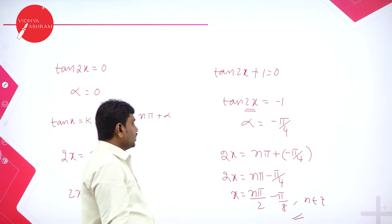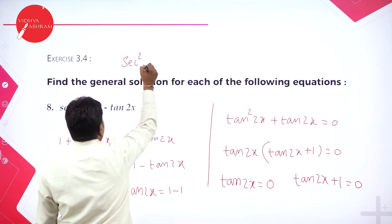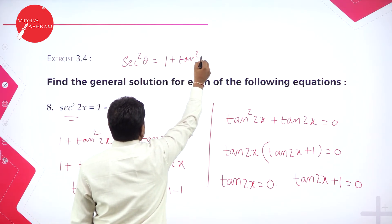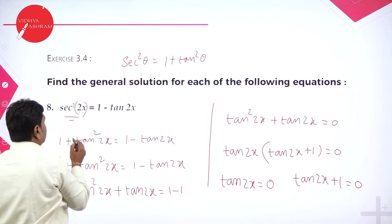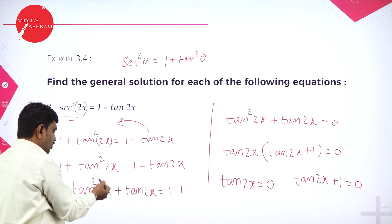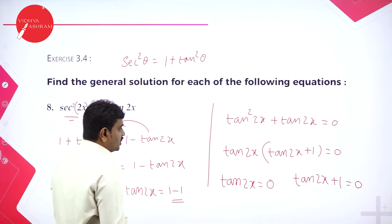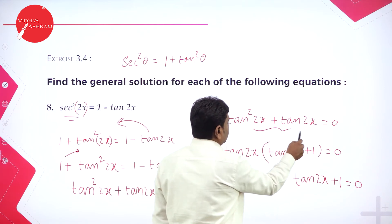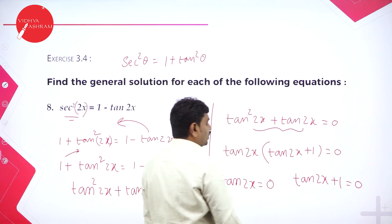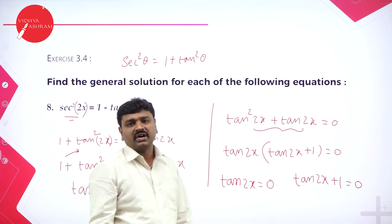Here sec²theta can be written as 1 plus tan²theta. So sec²2x is written as 1 plus tan²2x. Bring tan 2x to the LHS and transfer 1 to that side; 1 minus 1 is 0. In these two terms take tan 2x common, giving tan 2x times (tan 2x plus 1) equals 0. If product of 2 terms is 0, each term equals 0. Solve to get the required values.